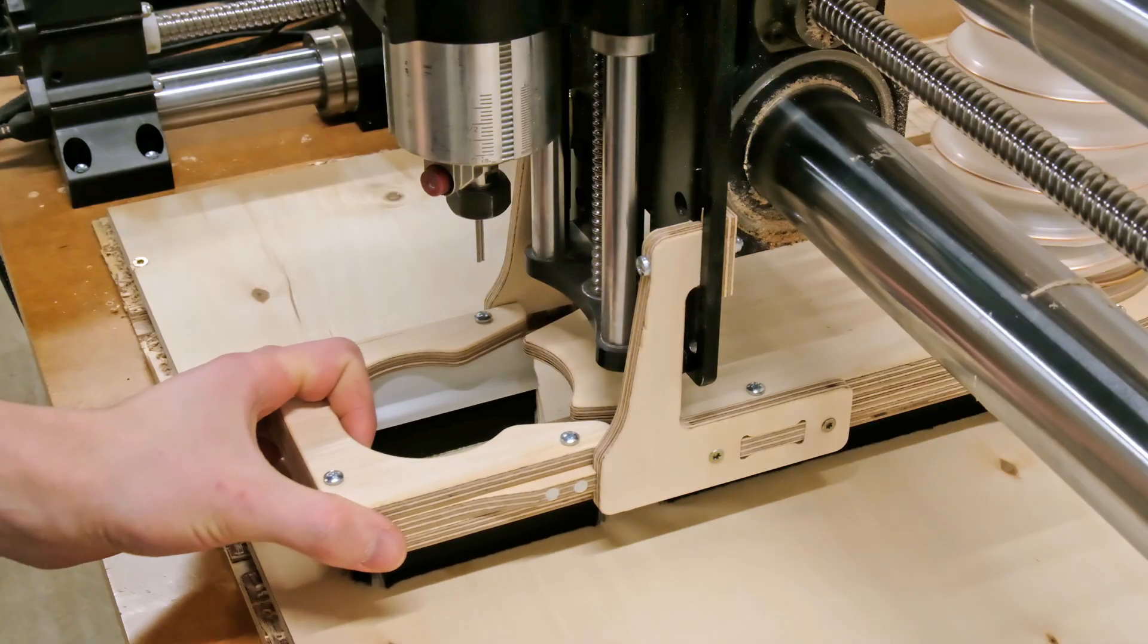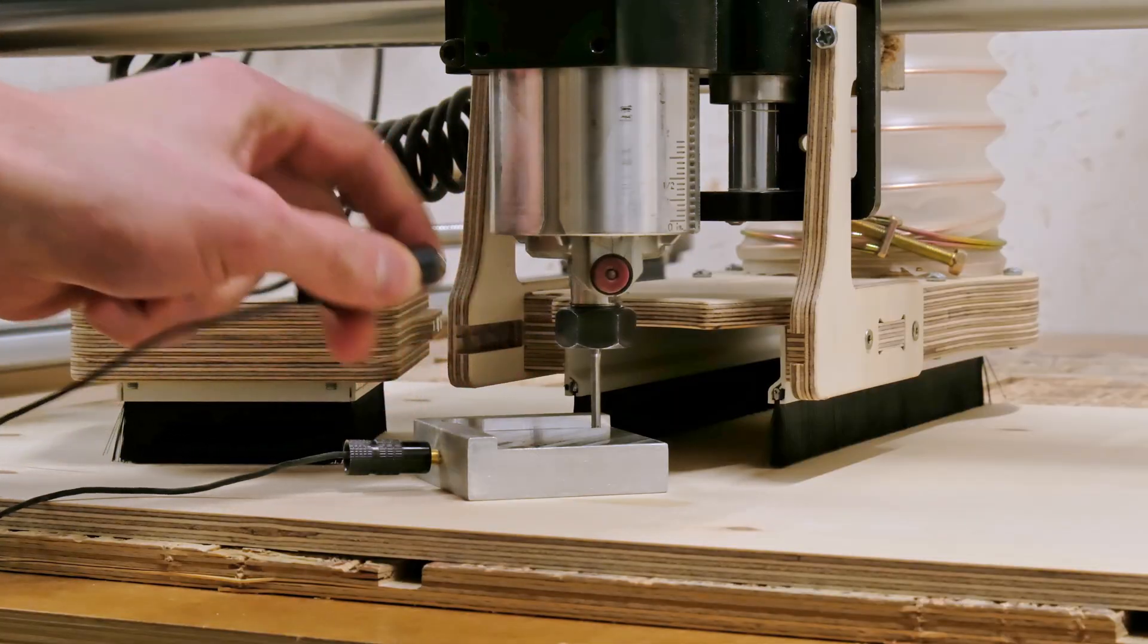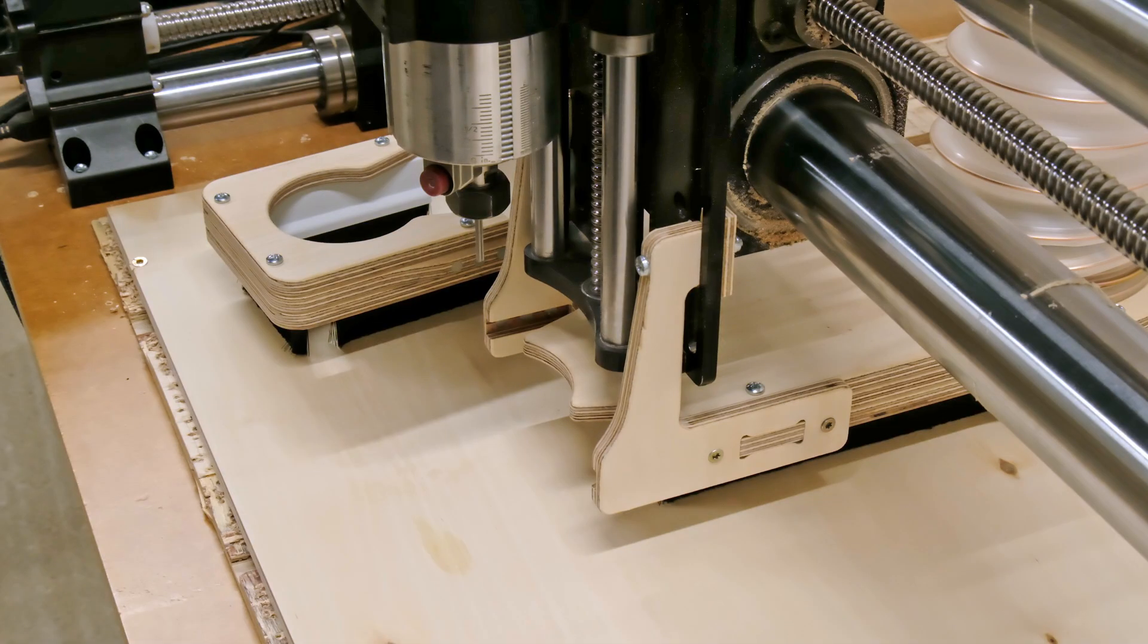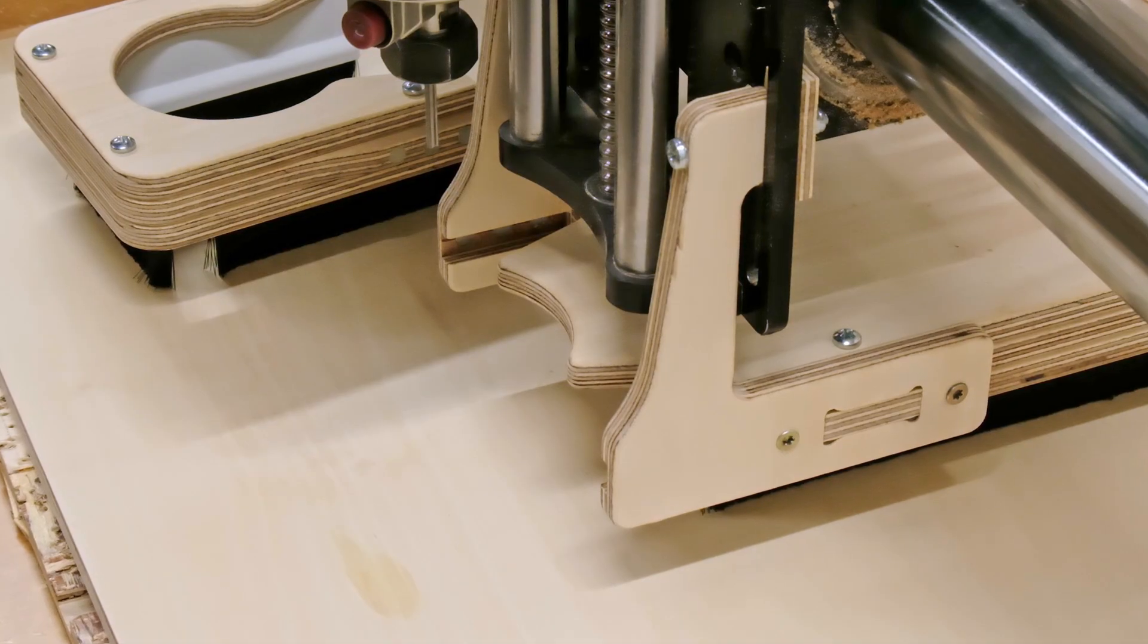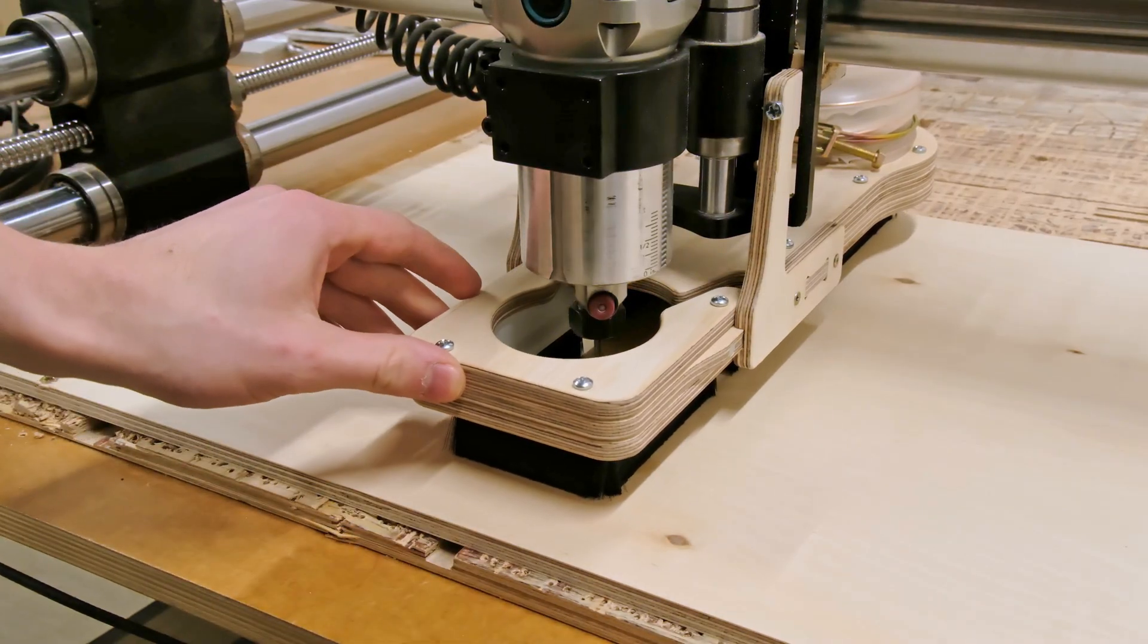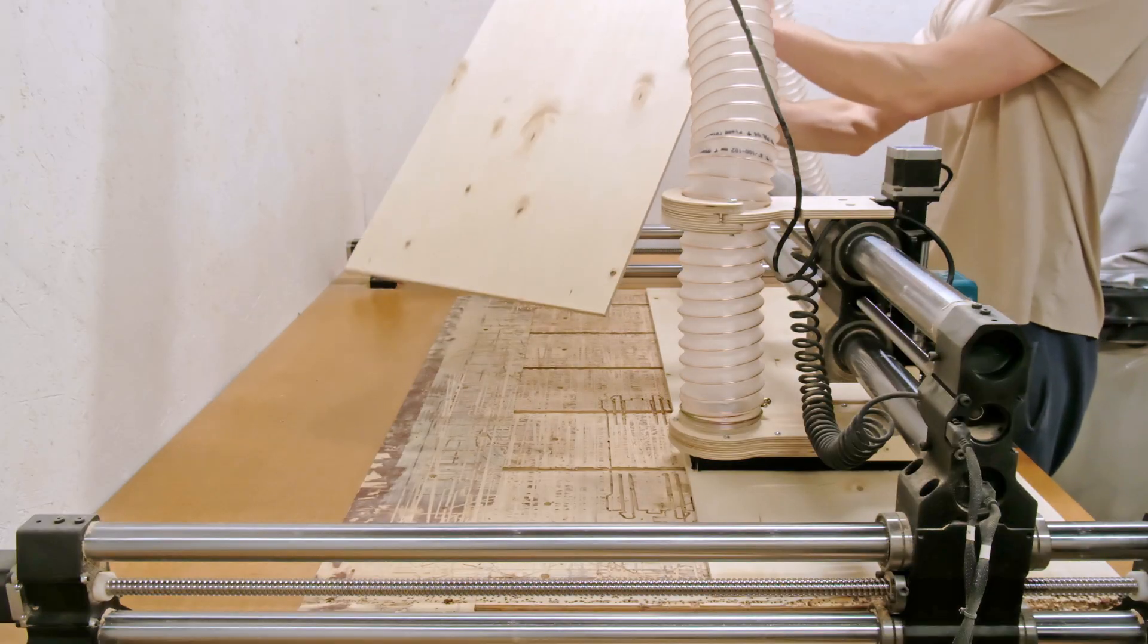To calibrate the router bit, we can simply remove the front of the dust shoe and do the necessary tasks. When the detachable shoe is removed, there is plenty of room to change the router bit if needed, which is nice in case you are doing multi-tool operations.